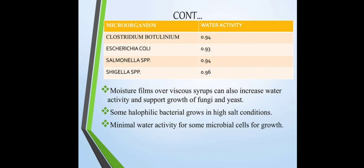Water activity values for some microorganisms: Clostridium botulinum 0.940, Escherichia coli 0.930, Salmonella spp. 0.940. Moisture film over various syrups can also increase water activity and support growth of fungi and yeast. Some halophilic bacteria grow in high salt conditions.